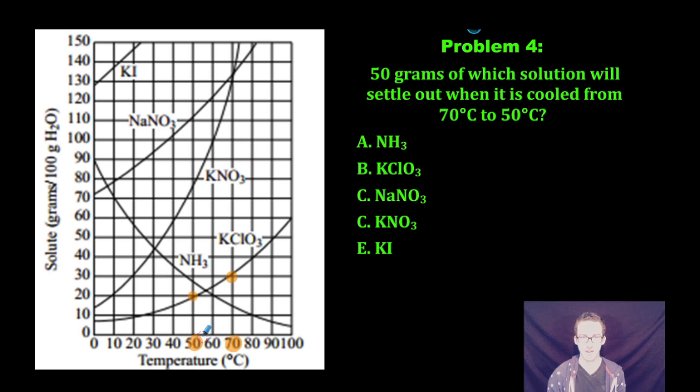If you look at potassium nitrate, again same temperatures. At 70 degrees Celsius, I'm going to have about 130 grams, and at 50 degrees Celsius I'm going to have about 80 grams dissolved in solution. So as I think about answering this question, potassium nitrate is going to be our winner here. 50 grams of solution is going to settle out as I cool it down from 70 degrees to 50 degrees.